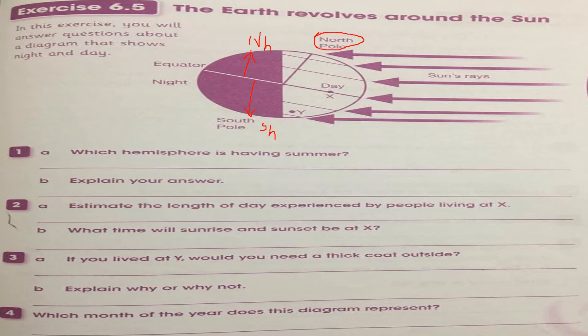Explain your answer. Here they are receiving the sunlight, and the day length is more than the night. Now estimate the length of the day experienced by people living at point X. Here, just think about this.